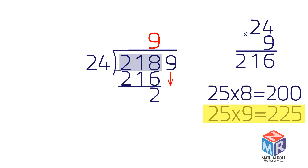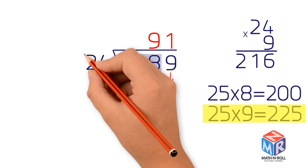Then bring down the next number, 9, to make the new number 29. Now ask how many times 24 goes into 29 — that is, what's 29 divided by 24? The answer is 1, with a remainder. So write the 1 above the 9, and then multiply 24 by 1 to get 24. Write the product under 29. Subtract 24 from 29 to get 5. The result should be less than the divisor. 5 is less than 24, so it's okay.